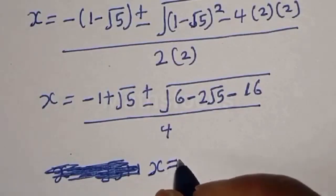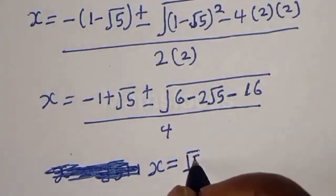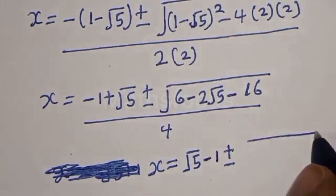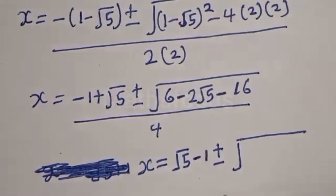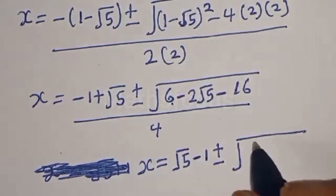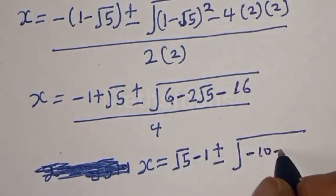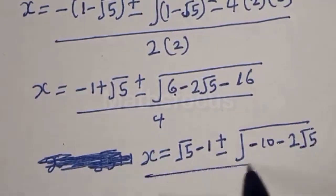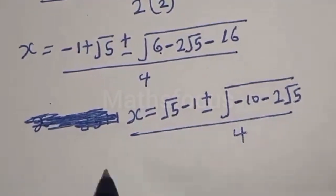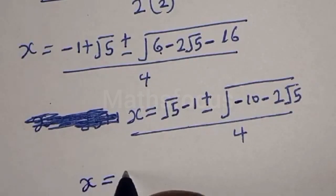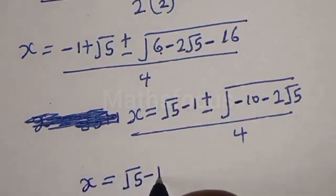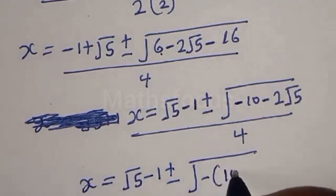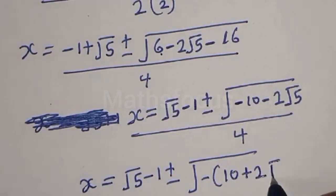So x equals (√5 minus 1) plus or minus square root of minus(10 plus 2√5), over 4. Since the square root of minus 1 equals i,